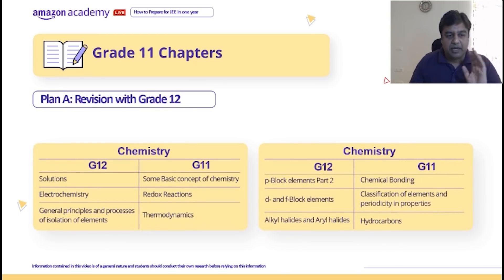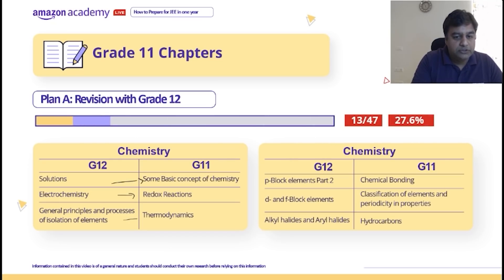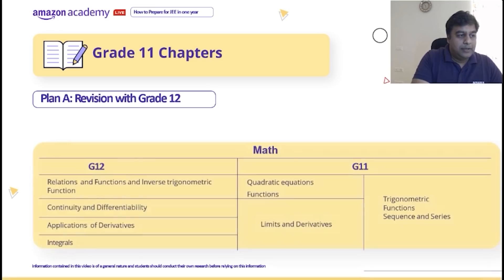Now let's go to chemistry. With solutions you can do some basic concepts of chemistry, electrochemistry with redox reactions, and so on. How many chapters? Seven chapters have been covered. Out of total how many? Thirteen chapters, so 27.6% coverage.